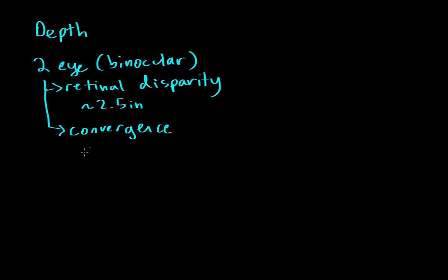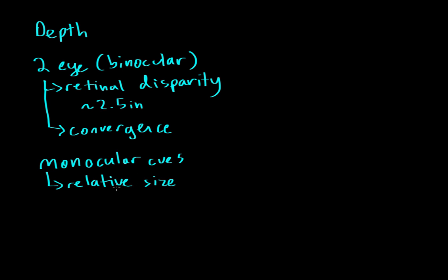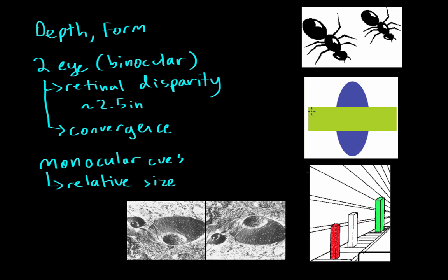There are other cues we can get that we don't need two eyes for — those are monocular cues. One monocular cue is relative size. Relative size gives us an idea of the form of an object. For example, if we look at two ants, and one ant appears bigger, we know ants are fairly the same size in real life. So since one ant appears bigger, we perceive it as being closer to us, even though both ants are actually the same size.